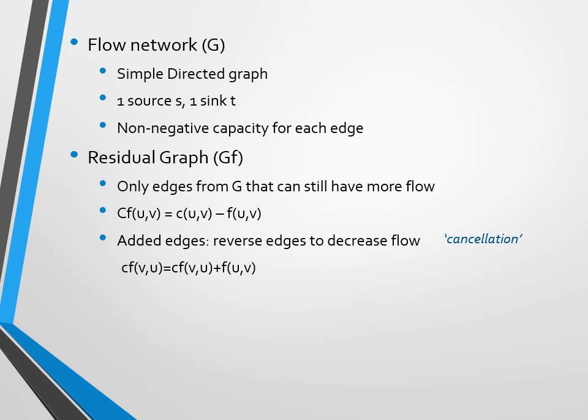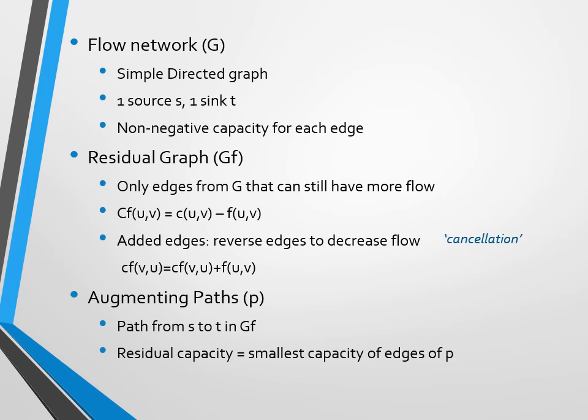The capacity of the reverse edge will be increased every time we find a new flow flowing through it. And in this residual graph, we will look for augmenting paths, which are simple paths from the source to the sink. And we will try to find the residual capacity, which is the smallest capacity of all the edges along P.